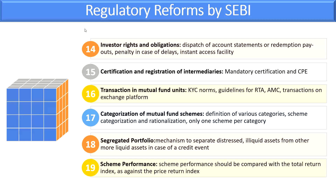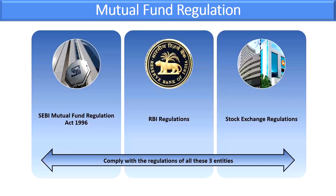For scheme performance, provisions state that performance should be compared with the Total Return Index (TRI) rather than the Price Return Index (PRI). The Price Return Index only considers price movement, but when investing in equity, the company also gives dividends, bonuses, and other corporate benefits — all of which are captured in the Total Return Index. That's why TRI is a more appropriate benchmark for checking the performance of a scheme.